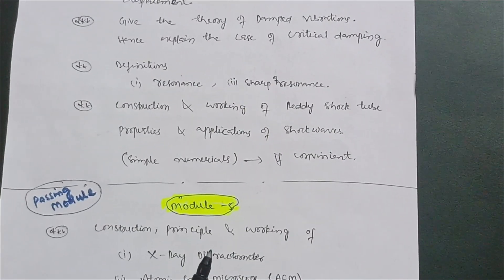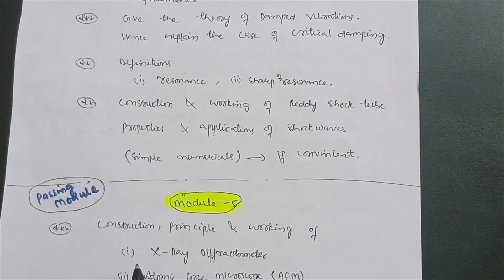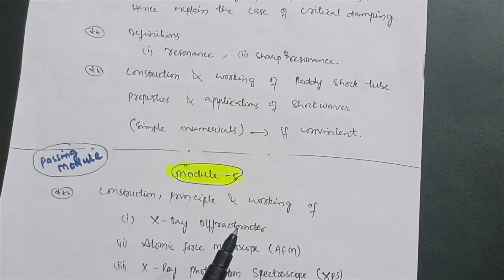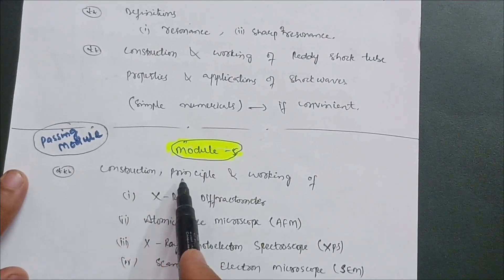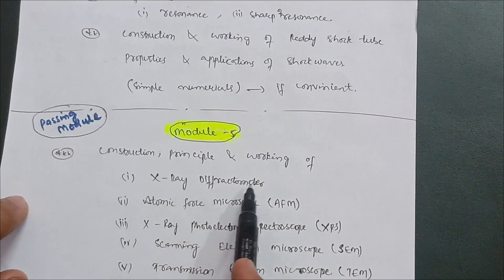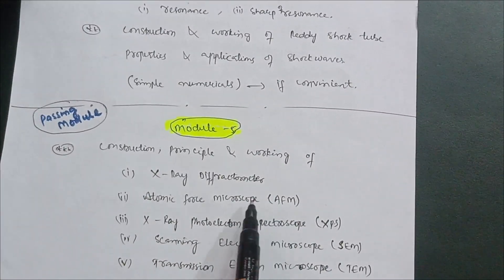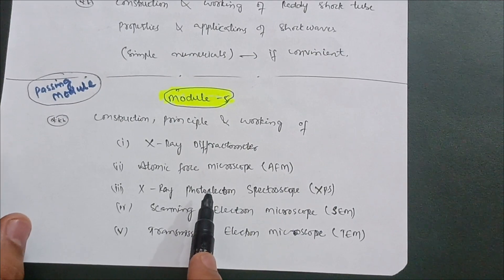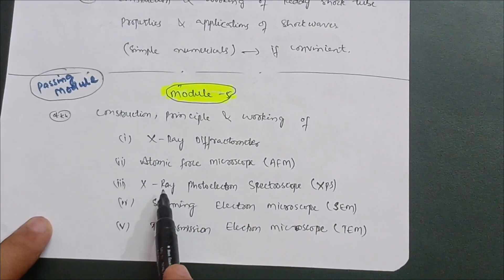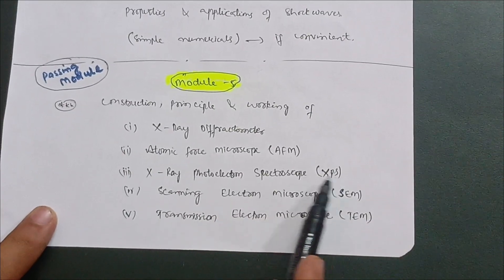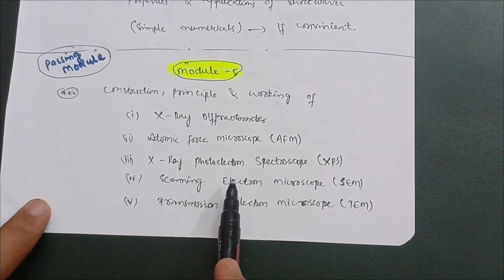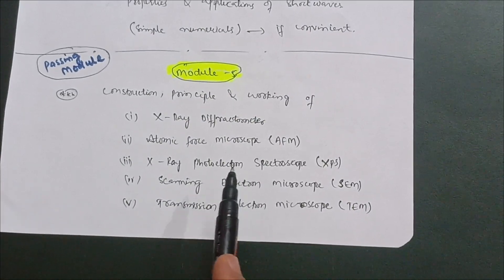Module 5 is another passing module. You can easily score 15 to 20 marks by covering the topics I discuss here. The key topics are: construction, principle, and working of the X-ray diffractometer; Atomic Force Microscope (AFM); X-ray Photoelectron Spectroscope (XPS); Scanning Electron Microscope (SEM); and Transmission Electron Microscope (TEM). For all five, focus on the construction and working principle, and make a neat diagram in the examination.